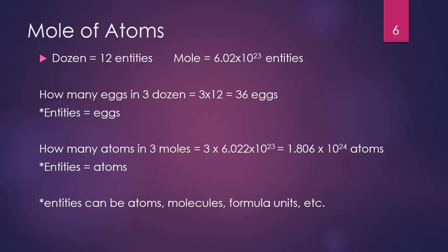We use the definition of 'dozen' in our calculations. For example, to calculate how many eggs are in three dozen, we take 3 × 12 = 36 eggs. We apply the same method using Avogadro's number: to find how many atoms are in three moles, we take 3 × 6.022 × 10²³, which gives us the number of atoms present in three moles.